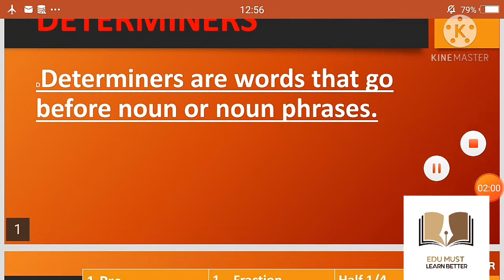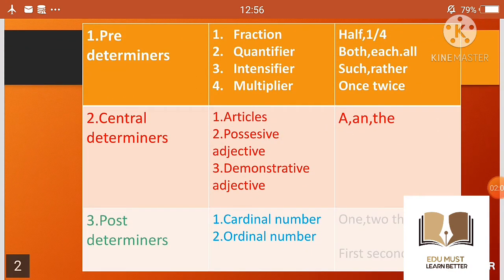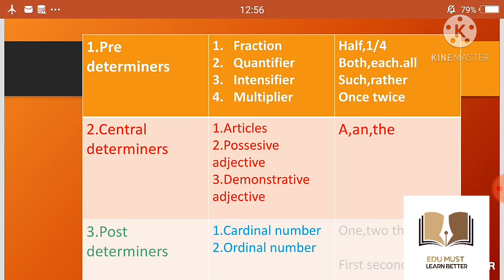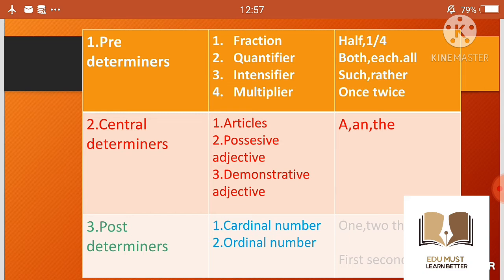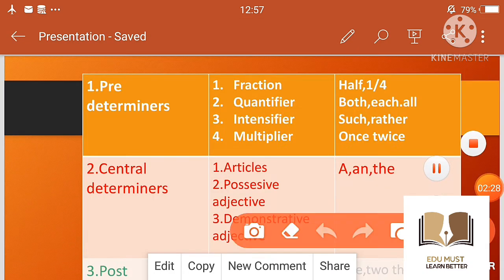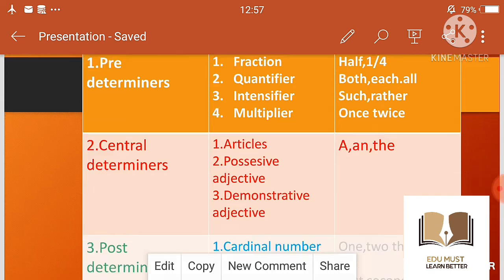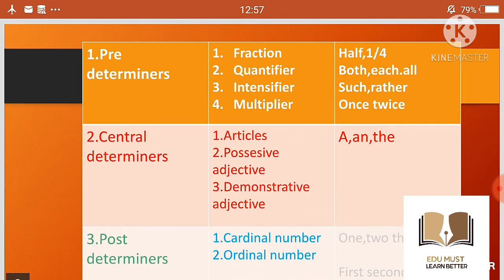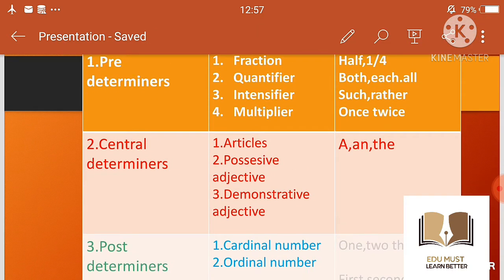अब हम types of determiners पर move on करते हैं। Determiners की 4-5 types होती हैं जैसे article, demonstrative, possessive — इन पर हम बाद में discuss करेंगे। But firstly, there are three structural types of determiners: pre-determiner, central determiner, and post-determiner.